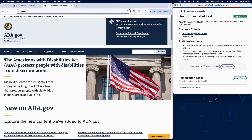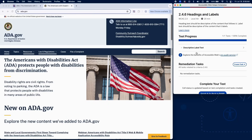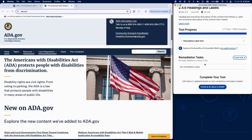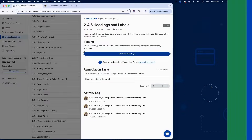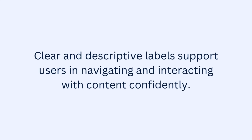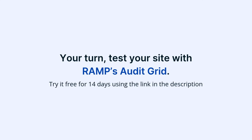And that wraps up testing for Success Criterion 2.4.6 using RAMP's Audit Grid and Chrome extension. Clear and descriptive labels support users in navigating and interacting with content confidently. Now it's your turn — test your site with RAMP's Audit Grid. Try it free for 14 days using the link in the description.